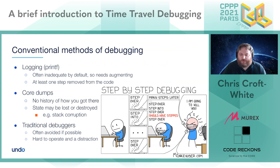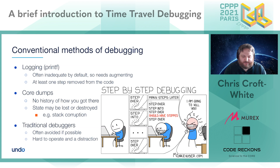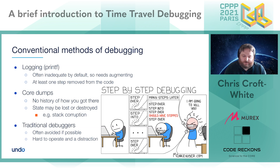In terms of conventional methods of debugging that we're familiar with, everyone on this call is going to know printf, cout, or whatever you want to use for getting logs out. Often, logging is inadequate by default and you have to go in and augment it, instrument your code to provide extra data. It's always going to be a step removed from the code, but it's the way that we all know and love.